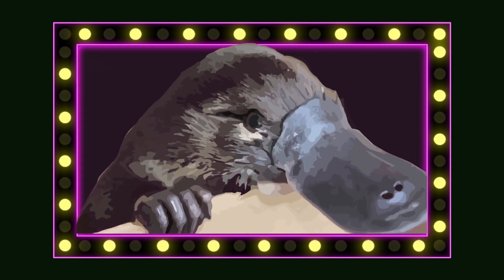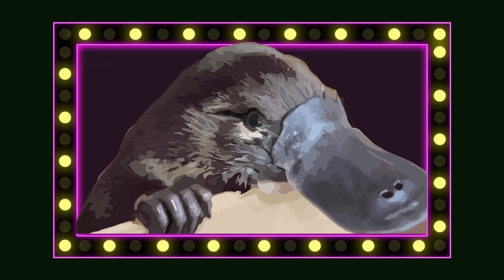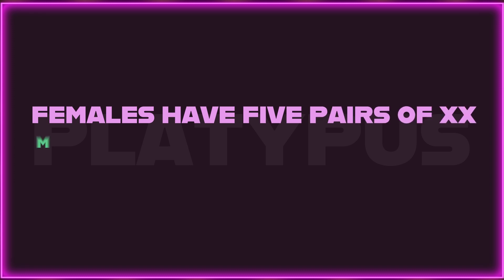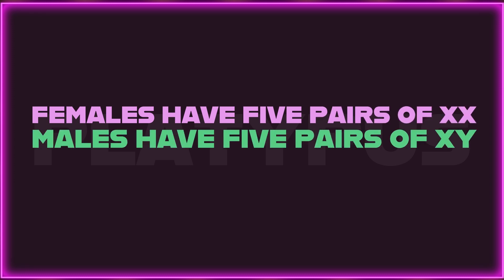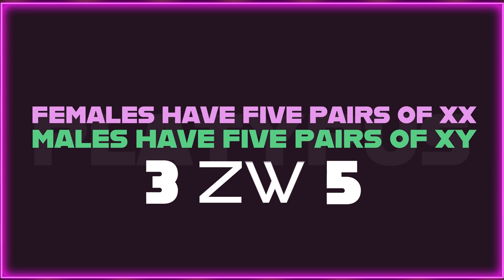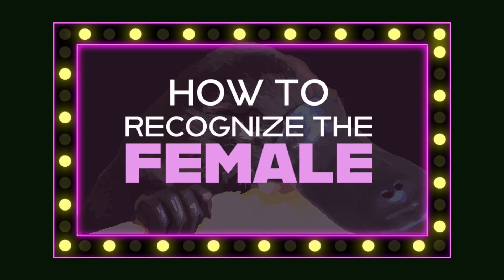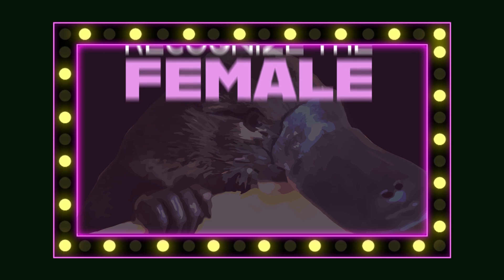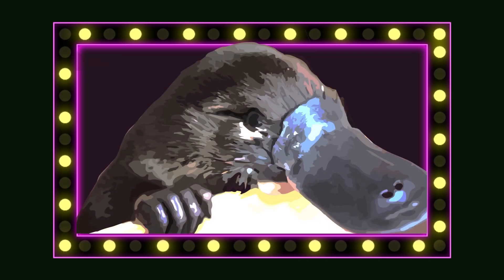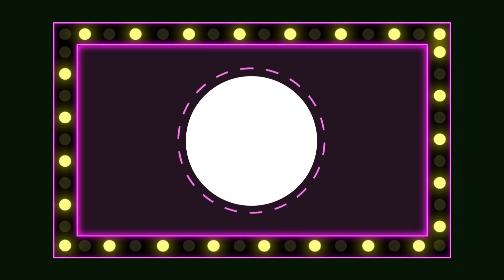Let's try a difficult one now. Platypuses have five pairs of sex chromosomes, not two pairs like other animals. Females have five pairs of XX and males five pairs of XY, but pairs three and five look a bit more like ZW chromosomes than mammalian XY chromosomes. As Dr. Hilton says, they're complicated creatures. So if they have five pairs of sex chromosomes, how do we know who the female is? Well, she's the only furry mammal that lays eggs — so she too makes large gametes.